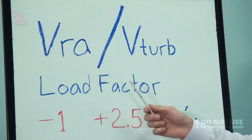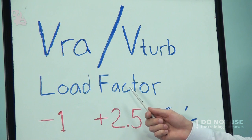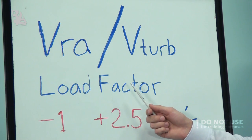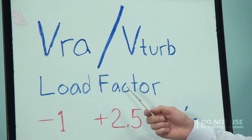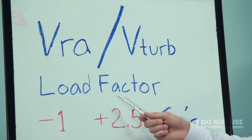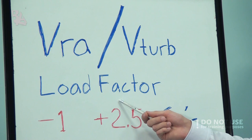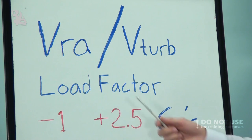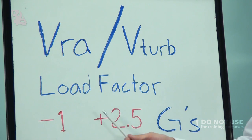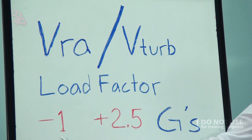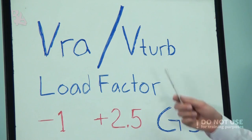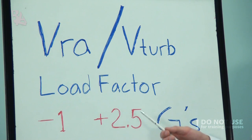When maintaining the turbulence penetration speed or rough air speed, you will have a maximum safe margin in case of big changes in airspeed and the likelihood of exceeding the maximum load factor. A large transport aircraft has a maximum load factor of negative 1G and positive 2.5G. If we exceed it, we may get permanent structural damage.